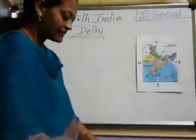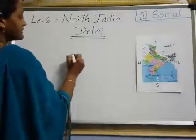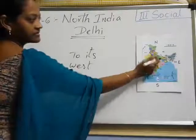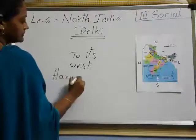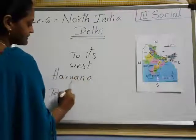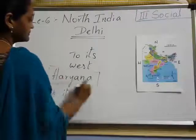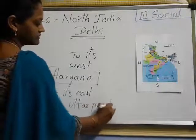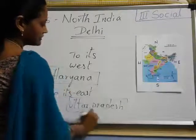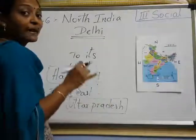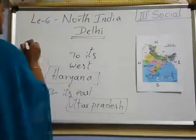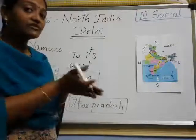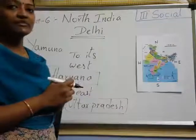So where is it located? To its West — which state is there? I said this is West side — Haryana. And to its East side — Uttar Pradesh. So Delhi is located along the banks of river Yamuna.